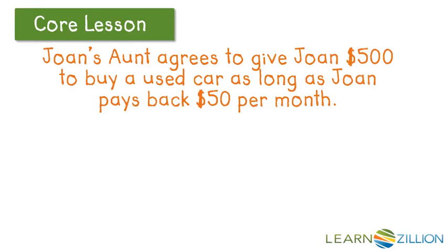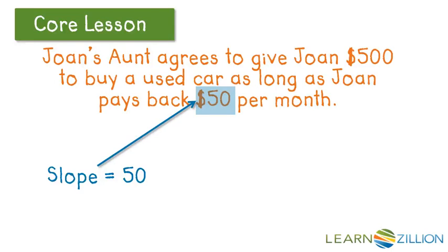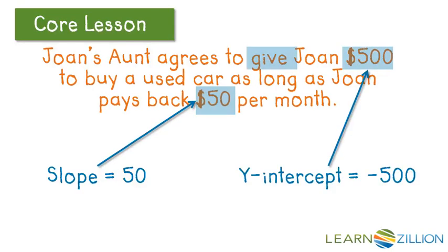Back to our problem. Joan gets $500 from her aunt and she has to pay back $50 per month. The slope indicator word 'per' tells us that $50 per month is going to happen on a monthly basis, so that is going to be our slope — and I interpret the slope as positive 50. The y-intercept, or the initial value, is $500 because Joan's aunt gives it to her once — that is a one-time thing. I interpreted this as negative 500, because Joan is now in debt to her aunt by $500, and she's going to pay, or climb back towards zero, $50 per month.